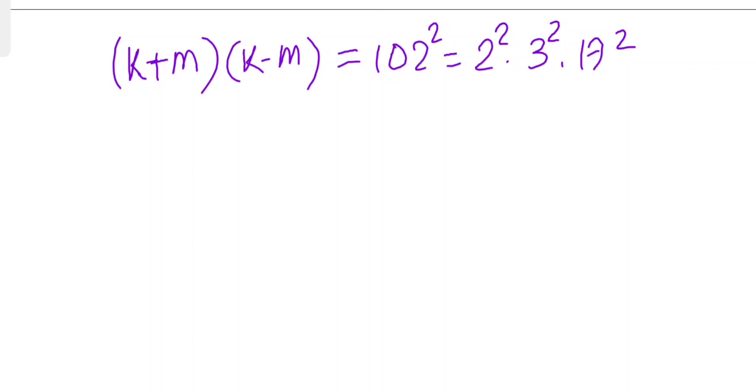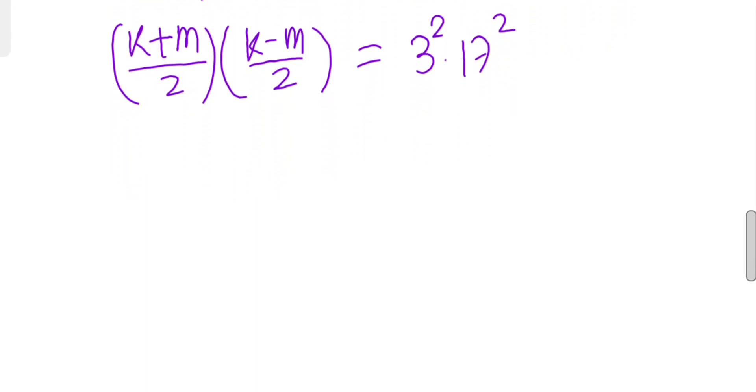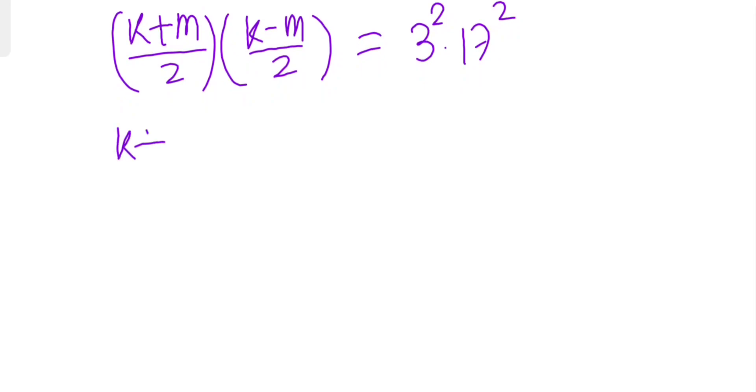From here we can see that both k + m and k - m are positive numbers, so we can divide both sides by 4. We can write (k + m)/2 times (k - m)/2, and this gives us 3² times 17². We have only finitely many possible solutions here. As (k + m)/2 is more than (k - m)/2, we have four following possibilities.